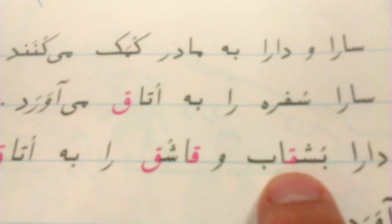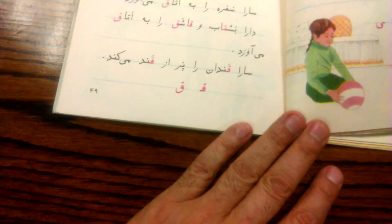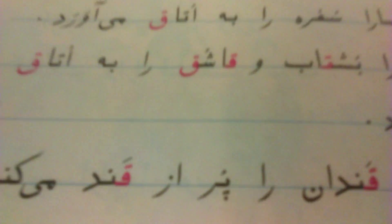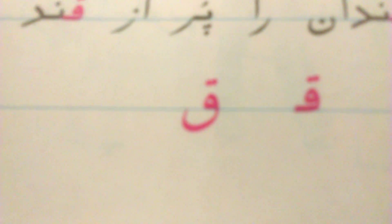All these words have qaf. Qandan is what you put the sugar cubes in. That's qandan. She's putting the sugar cubes in the qandan. So qand is sugar cube, qandan is what you put the sugar cube in. And that's the letter qaf.